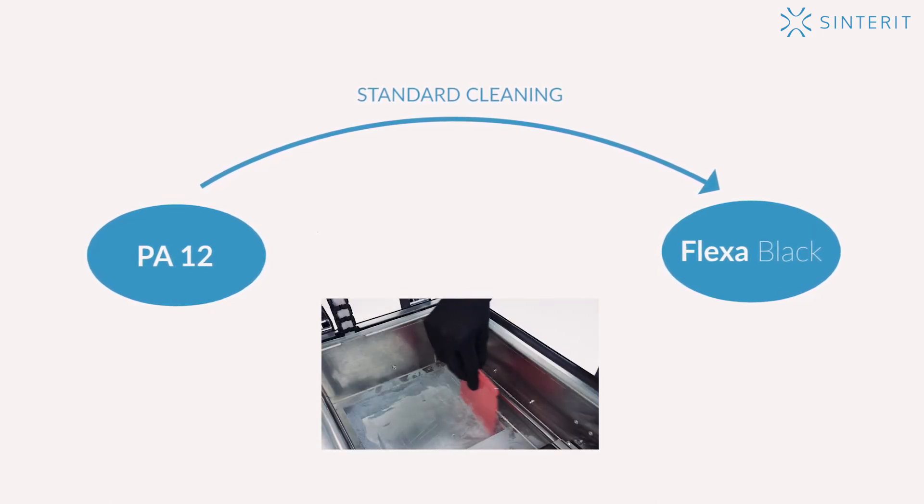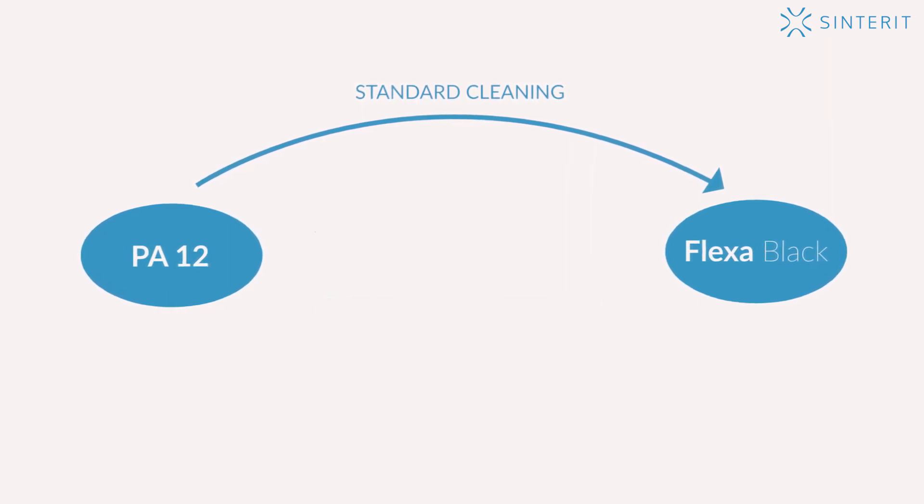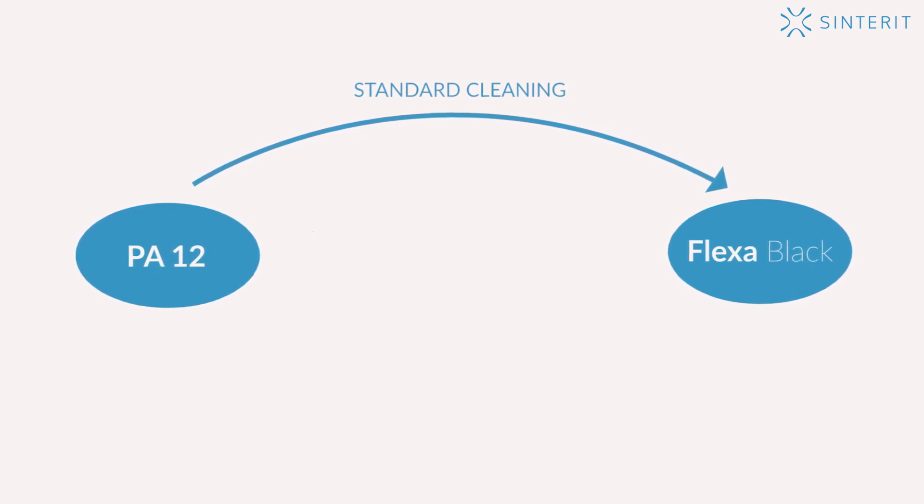As it has been already mentioned, PA12 constitutes a sealing for the machine. It is only necessary to reprogram the machine in order to adjust the printing parameters to the new material.